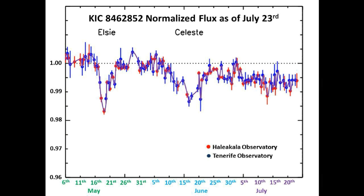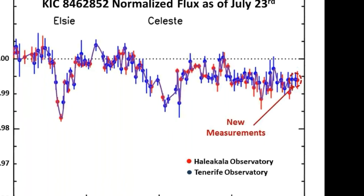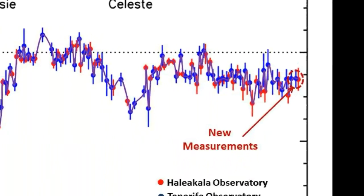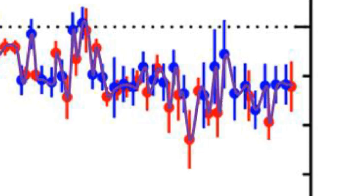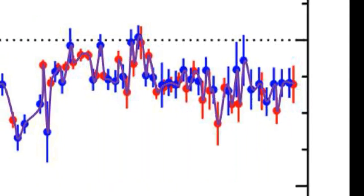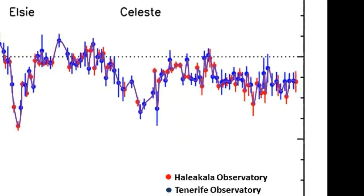So this is today's flux graph in the R band, and these are the three new data points measured since our last update. These are namely the data points for July 22nd and 23rd. Now we will show you where the current long-term accelerating dimming level is located.